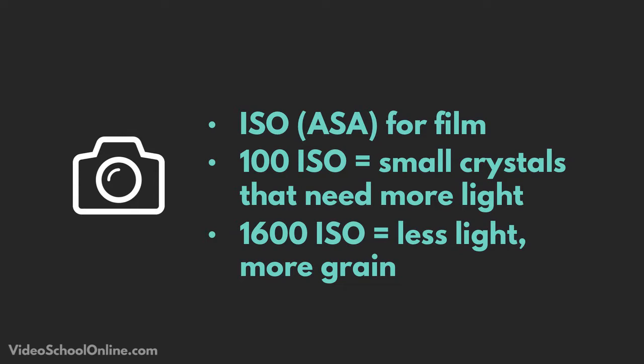Back in the day, film was made of crystals that were chemically reacting to light. You'd go through the whole process of exposing and securing that image in the darkroom. 100 ISO meant the film had very fine crystals, giving you a very clean image, but it required much more light to expose.